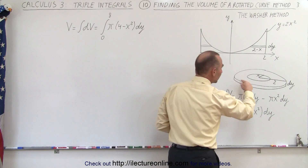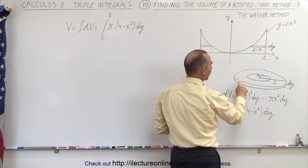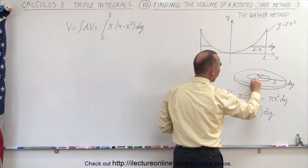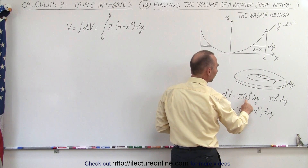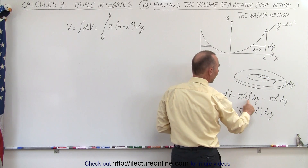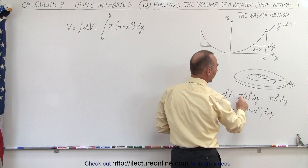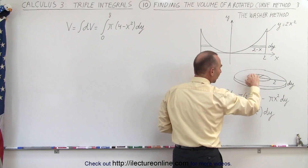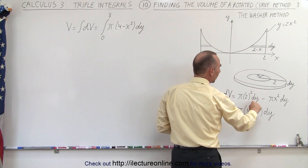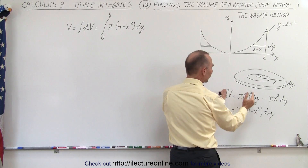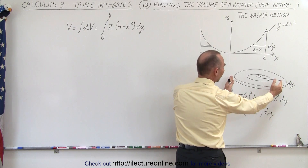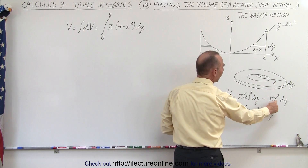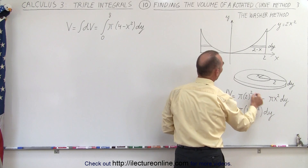The volume dv can be calculated by taking the volume of the whole thing without the hole. So this would be pi times the radius squared times dy. Pi times 2 squared is the area of this without the hole, times dy, which is the thickness, giving you the volume — minus the volume of the hole, which is pi x squared dy.